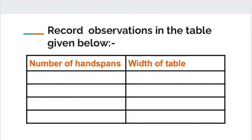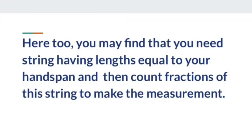Measure the exact width of the table using a scale, and observe the length and width of the table 4 times. Fill the observation table accordingly. You may find that you need a string having length equal to your handspan, and then count fractions of the string to make the exact measurement. The length of the string should be equal to your handspan.